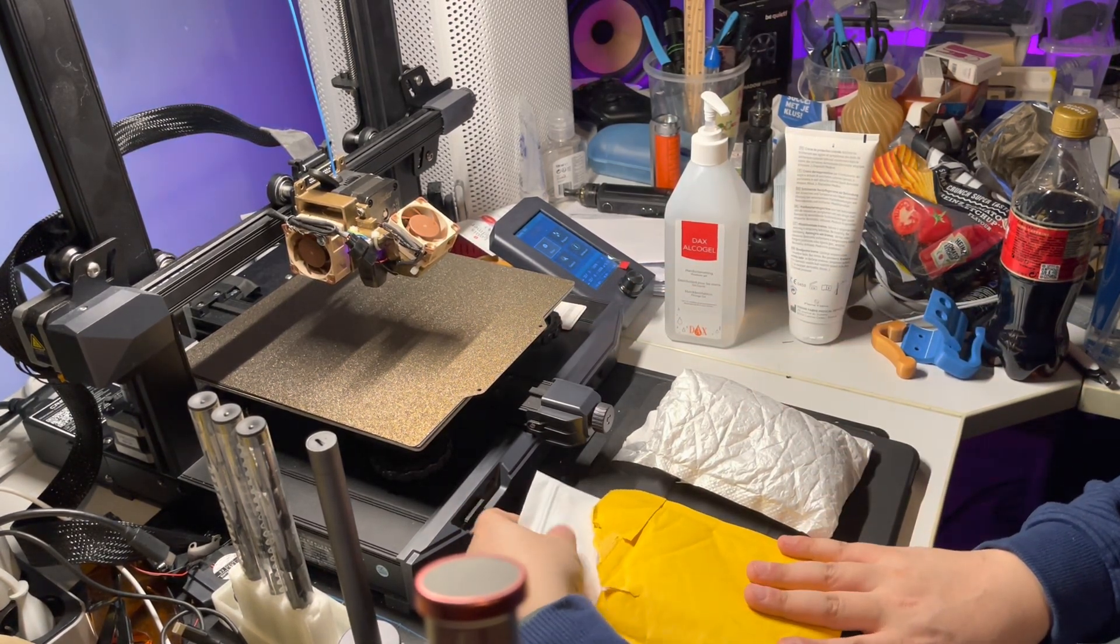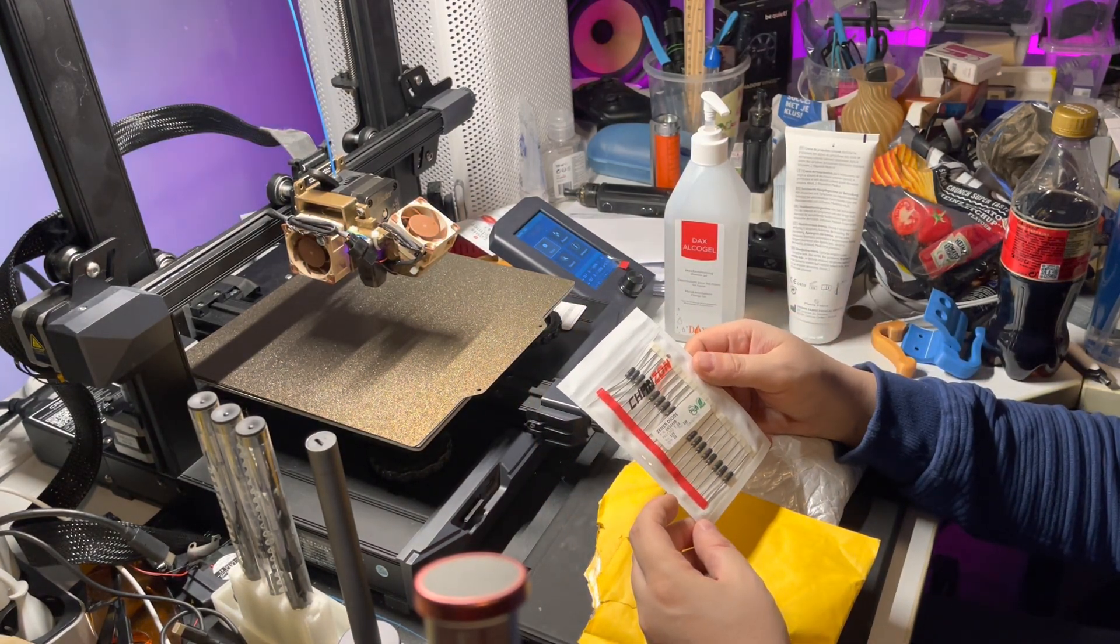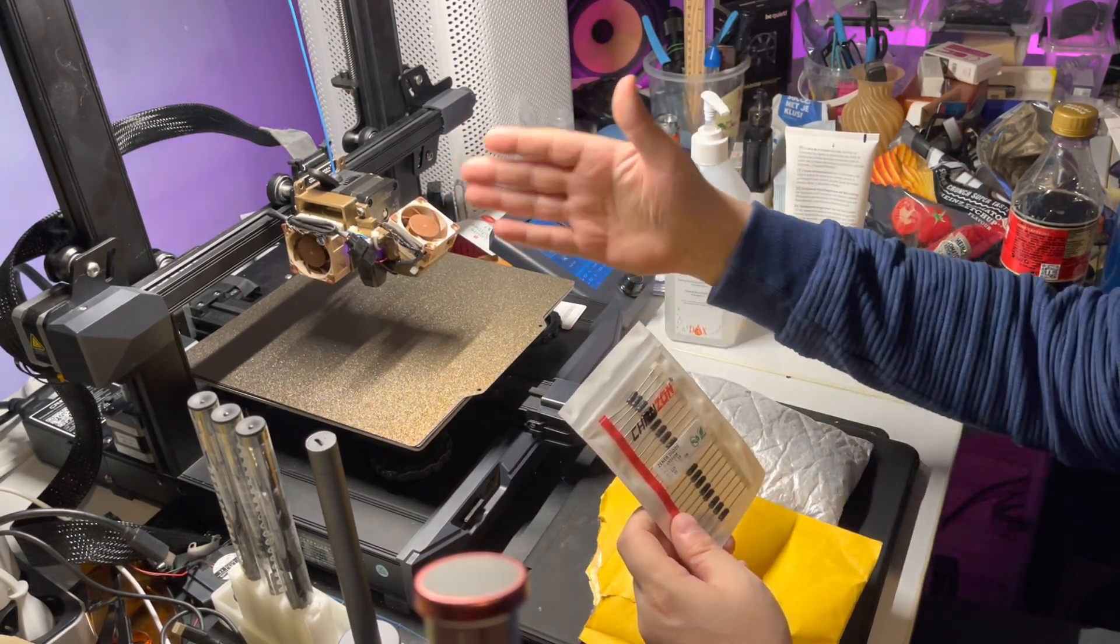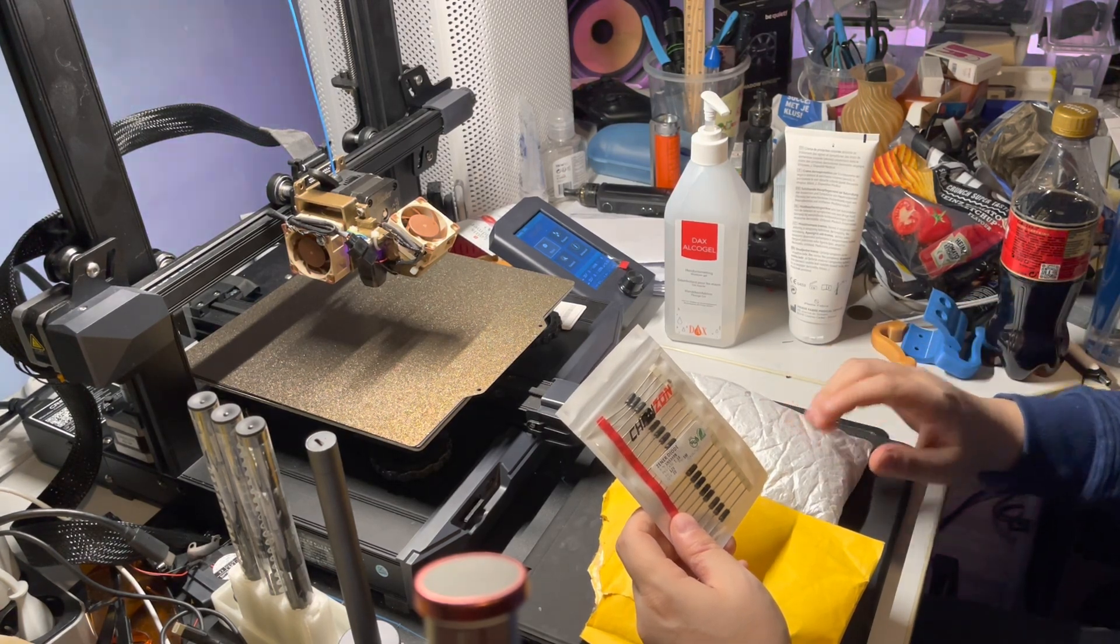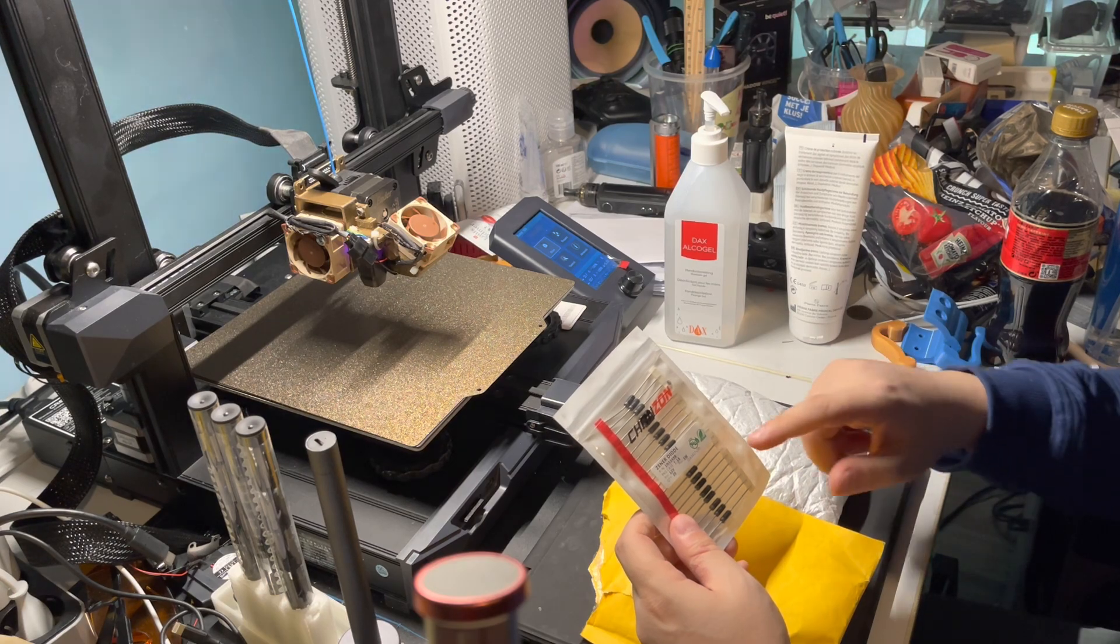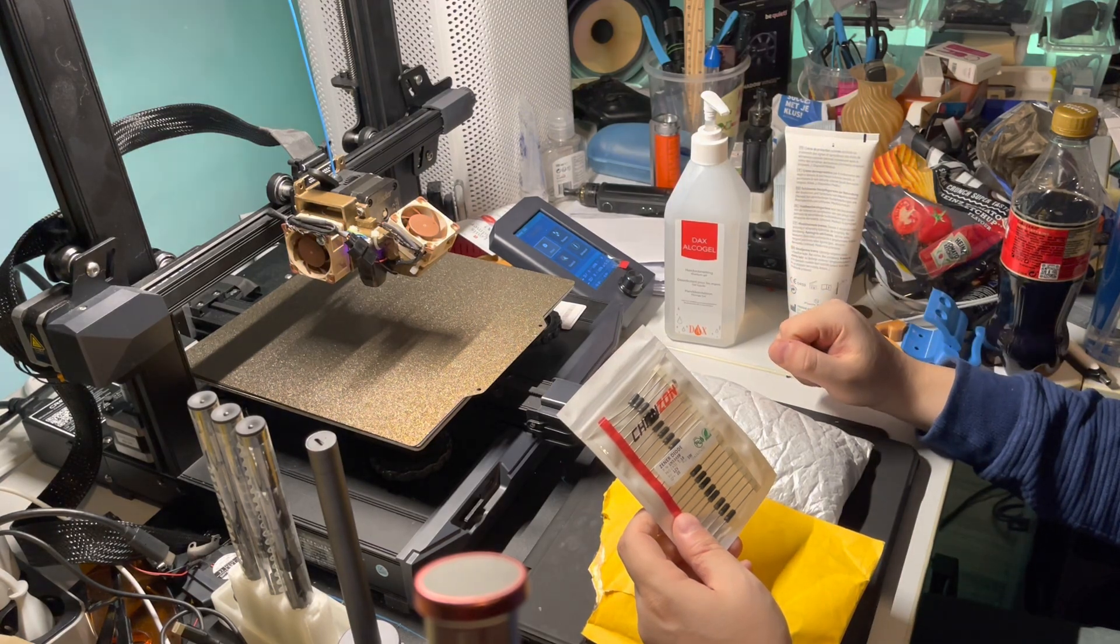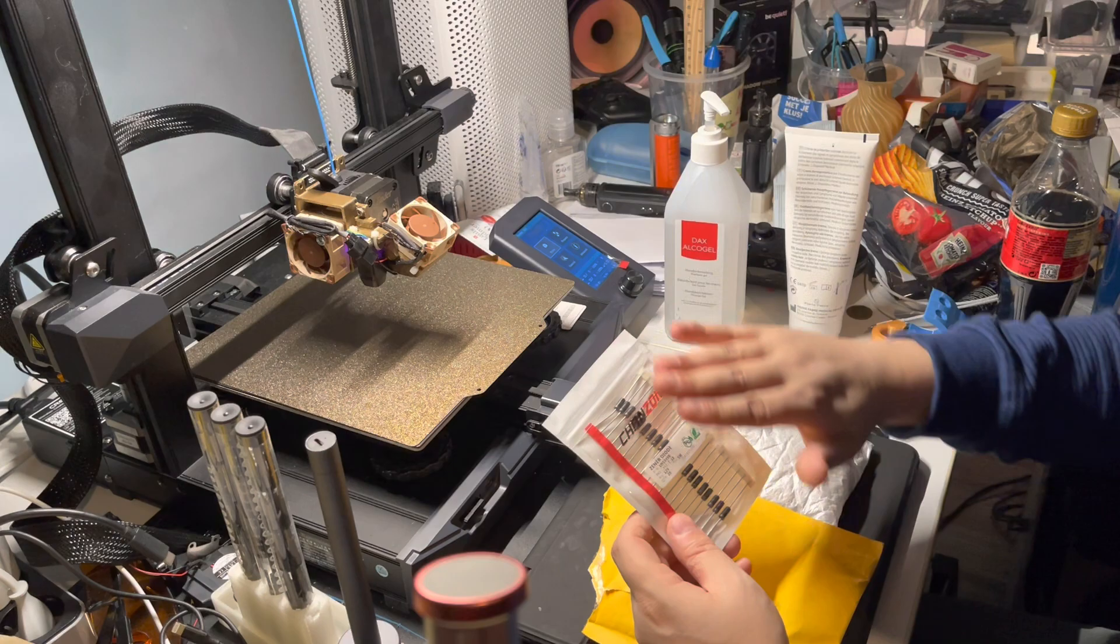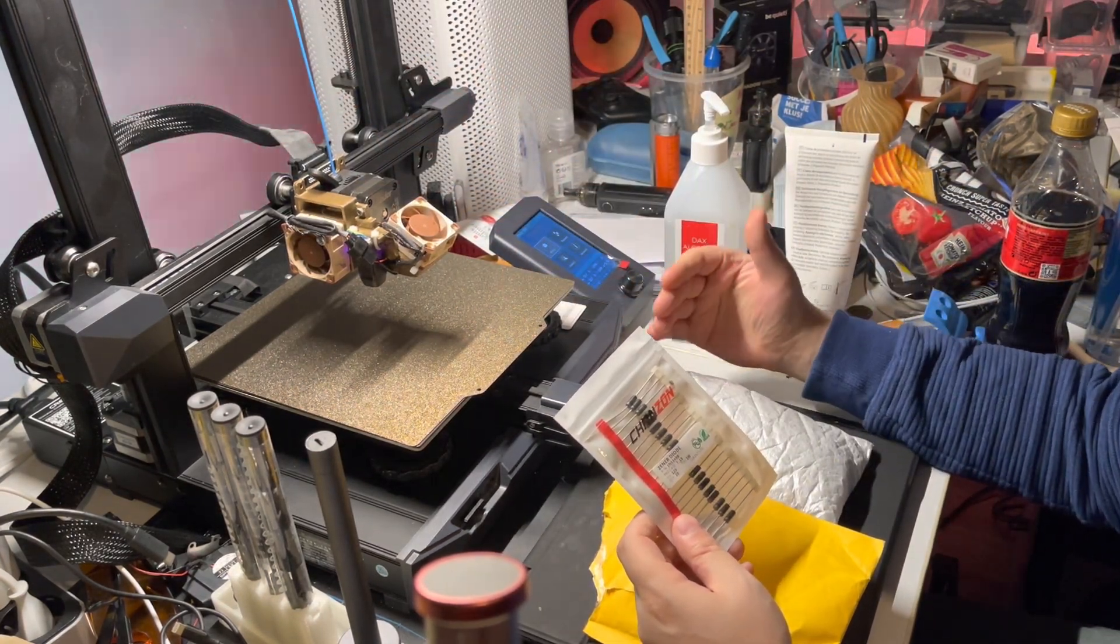So the first thing that I have is a Zener diode that you can use for your Noctua fans to take them from 24 volts to 12 volts. Instead of using a buck converter, you can use just a Zener diode from the cable that goes from your brake board to your Noctua fan. But I do recommend to use these on just the hotend fan, not on the parts cooling fan.